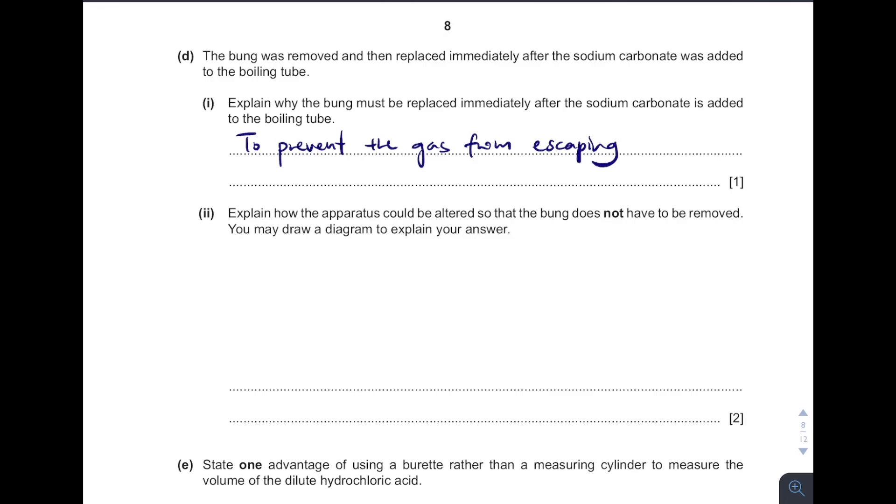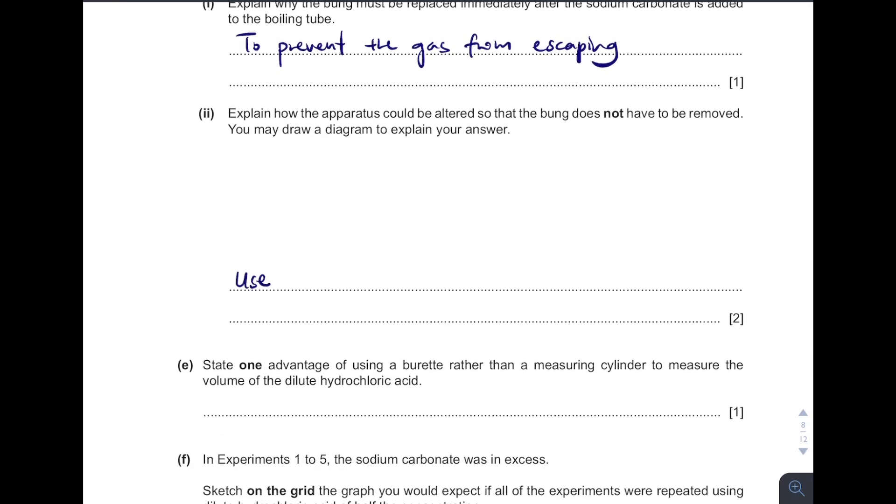How the apparatus could be altered, so that the bunk does not have to be removed. You may draw a diagram to explain your answer. So what you can do is, you can put a glass divider in the middle. You can put a divider to prevent the solution from reacting together. When you want to start the reaction, just tilt the flask. Use a divided flask or use glass divider. Either one will do. Tip flask to start the reaction.